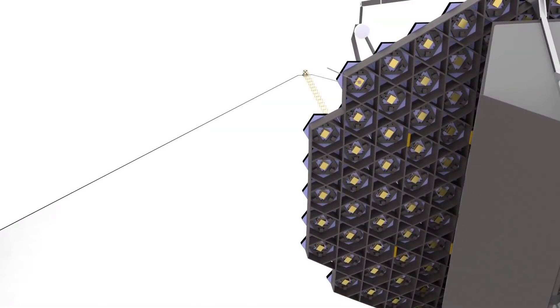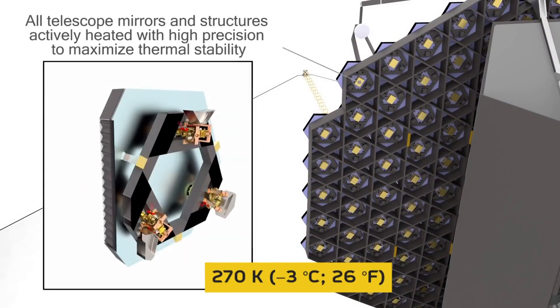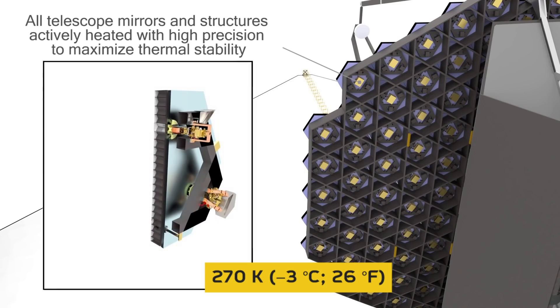The telescope is actively heated to a precise 270 Kelvin, minus 3 degrees Celsius or 26 degrees Fahrenheit, to control thermal disturbances.